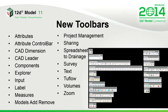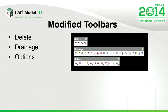The toolbars.4D file has had some new toolbars added and some existing ones modified. The new ones include, but are not limited to, attributes, CAD dimension and leader, components, and an explorer toolbar. The explorer toolbar has been quite popular, so we're looking to add that as the standard workspace — you can open not only your working folder in an explorer directly, but also your user folder and user libraries. Other new toolbars include label, measure, models add and remove, project management, sharing, spreadsheet to drainage, survey, text, to flow, volumes, and a zoom toolbar. Modified toolbars include the delete, drainage, and options toolbar.